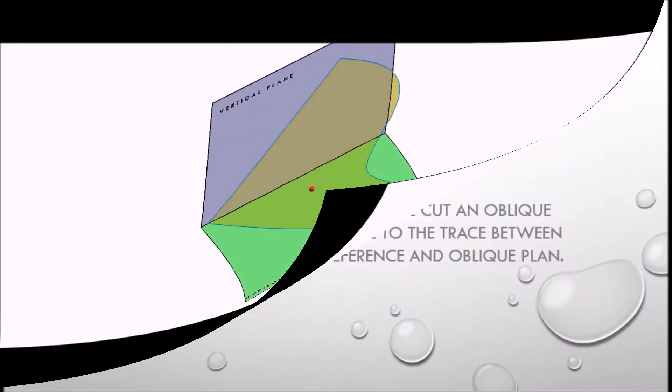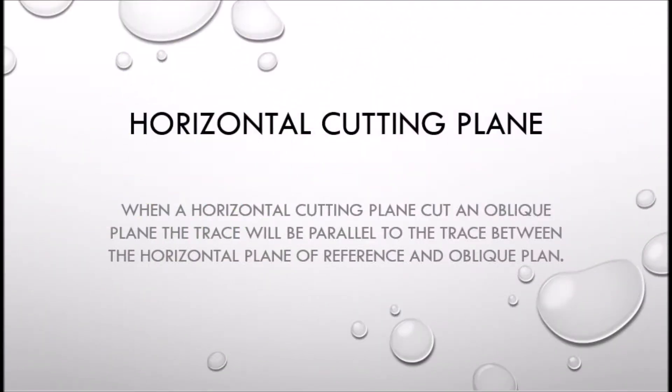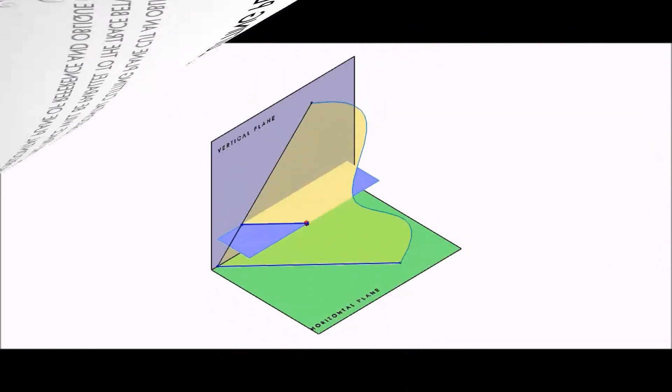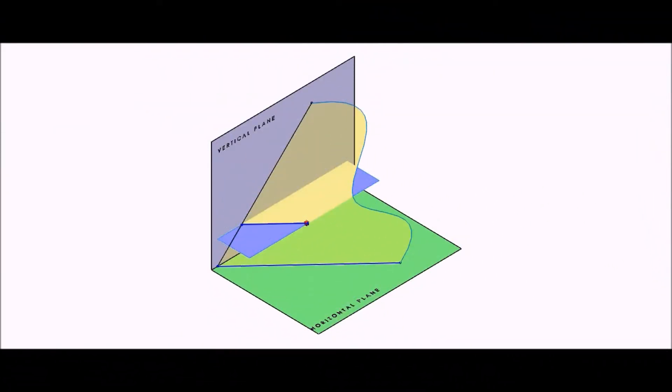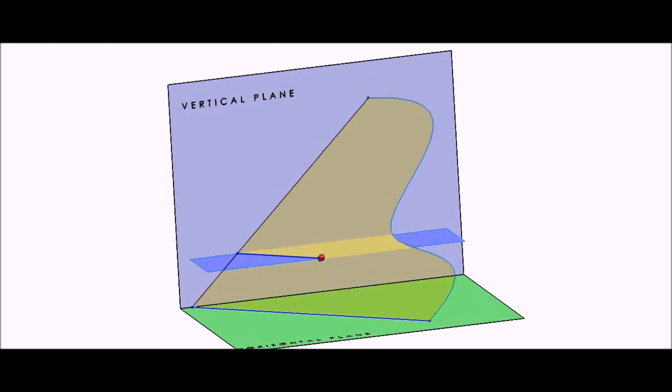When a horizontal cutting plane cuts an oblique plane, the trace will be parallel to the trace between the horizontal plane of reference and oblique plane. We see this in the SOLIDWORKS model shown.